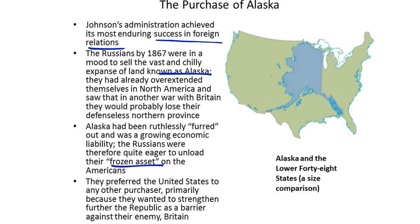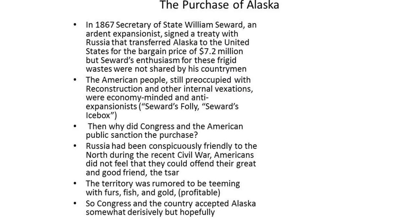The Russians were therefore eager to unload their frozen asset on the Americans. They preferred the United States to any other purchaser, primarily because they wanted to further strengthen the republic as a barrier against their enemy, Great Britain. In 1867, Secretary of State William Seward, an ardent expansionist, signed a treaty with Russia that transferred Alaska to the United States for the bargain price of $7.2 million.